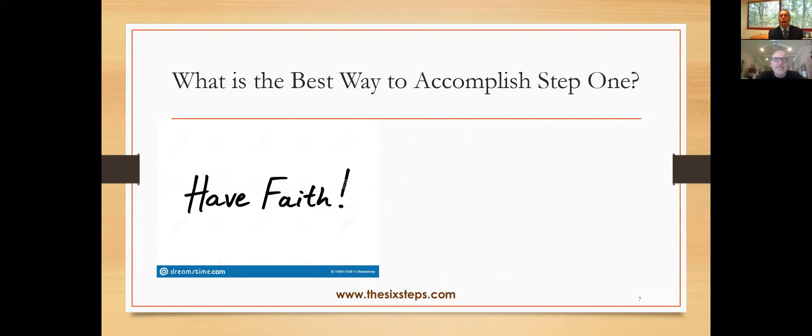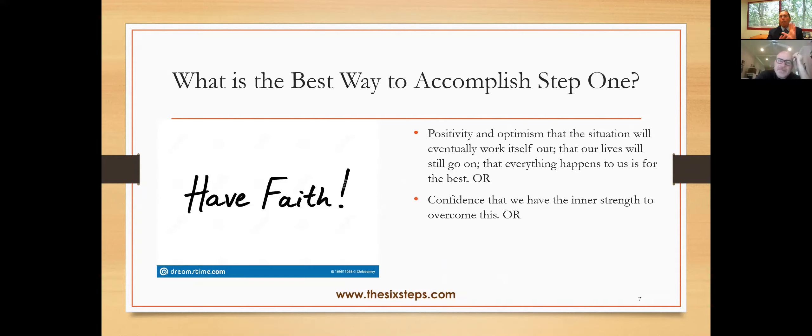So what's the best way to accomplish step number one? I say have faith. That could be broken into three potential possibilities. Number one, have faith could mean just be positive, be optimistic, the situation will eventually work out, your life will go on, everything happens for the best. Or it could be that maybe you just have self-confidence, your inner strength to say I'm going to overcome this. That's another kind of faith. And the third kind of faith is what most people think of as faith in a higher power and God, someone that loves us, protects us, has a plan for us. I don't know which one of those three or all three or two out of three you are.